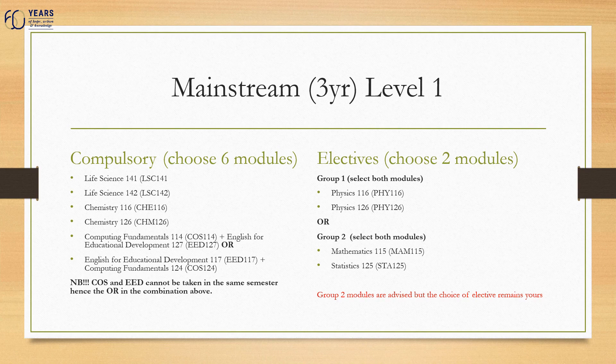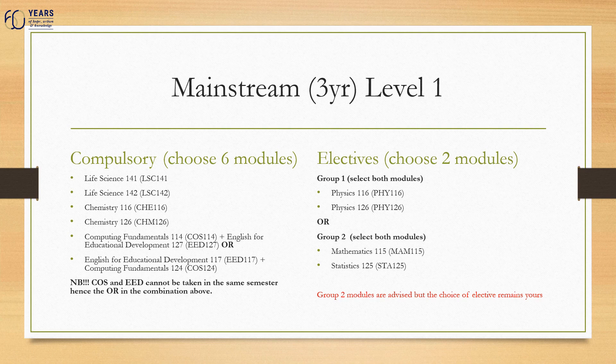In terms of electives, you have two groups available. Group one is Physics 116, a first semester module, and Physics 126, a second semester module. Group two is Mathematics 115, a first semester module, and Statistics 125, a second semester module. You must choose both modules from a particular group. Group two modules are advised by the department, but the choice of elective remains yours.